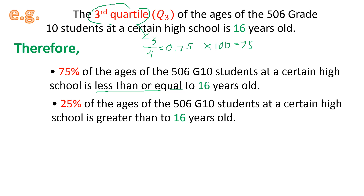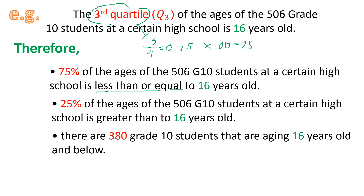We can also have this interpretation: there are 380 grade 10 students aging 16 years old and below. Since we are stating that 75% of 506 grade 10 students is less than or equal to 16, we may simply get 75% of 506 to make it more perceivable. Getting 75% of 506 gives us 379.5. We need to round up because we're talking about students, so it is 380. That's why there are 380 grade 10 students aging 16 years old and below.